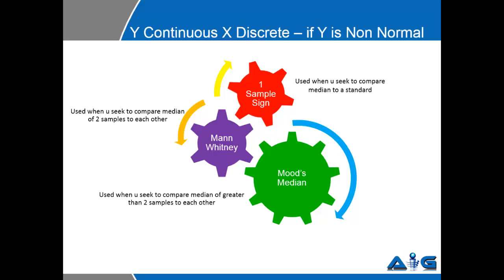One Sample Sign is to be conducted when we seek to compare the median to a standard. Mann-Whitney must be conducted when we seek to compare the median of two samples to each other. And Mood's Median, when we seek to compare the median of greater than two samples to each other.